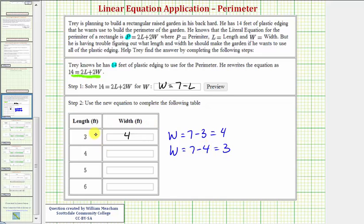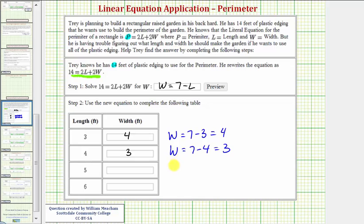Which means the garden could also be 4 feet by 3 feet. But notice how this is the same as 3 feet by 4 feet, though the orientation of the garden might be different. The length is 5 feet, L is 5. So we have W equals 7 minus 5, which equals 2. So the length is 5 feet, the width would be 2 feet.